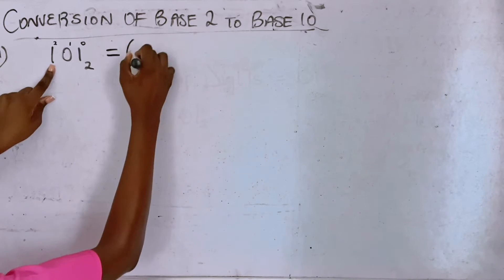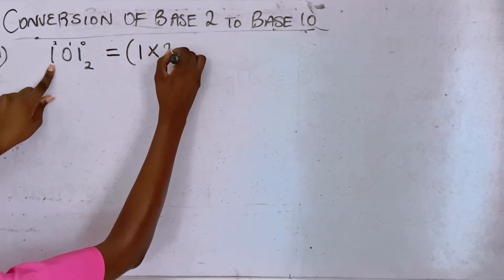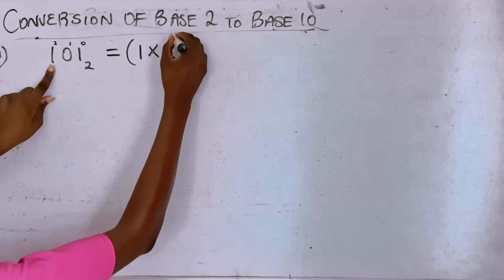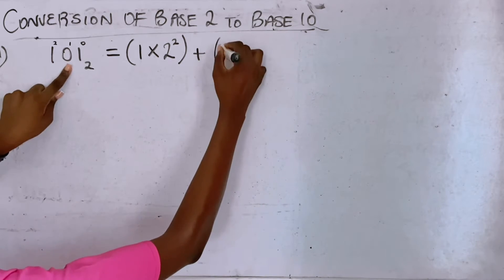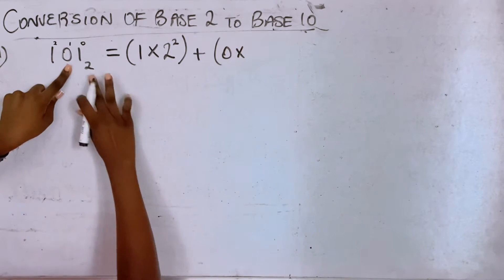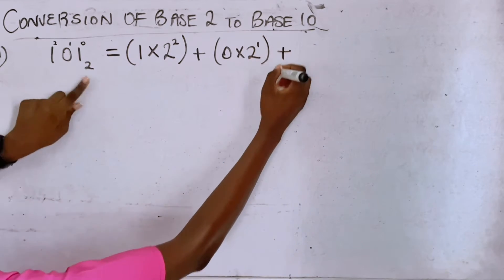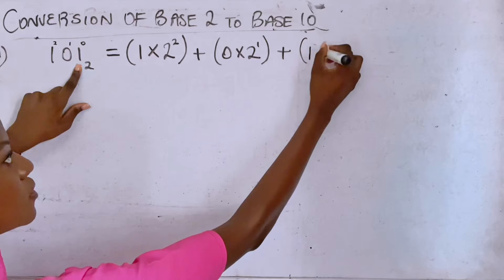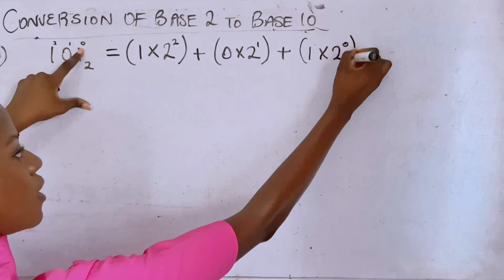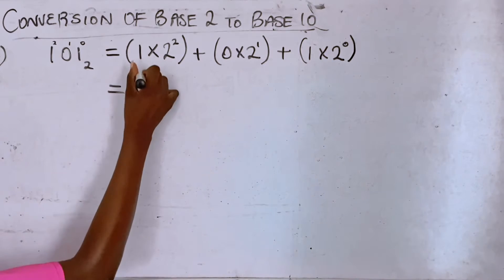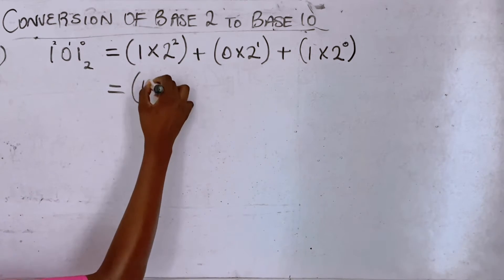So starting here we have one times the base which is two raised to the power we have there. Moving to the next one, you have zero times its base raised to the power that we have, and the last digit times its base raised to its power. So of course you should learn your multiplication. You would first do this which is two raised to the power of two.